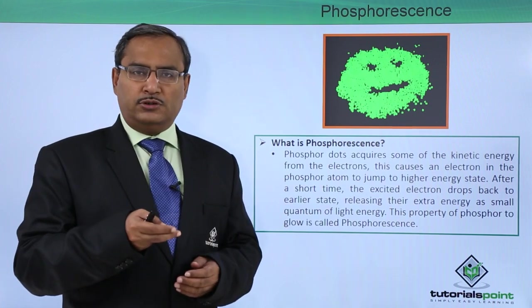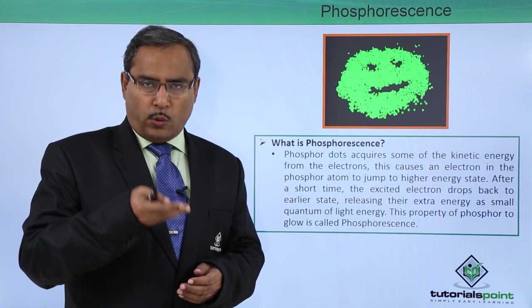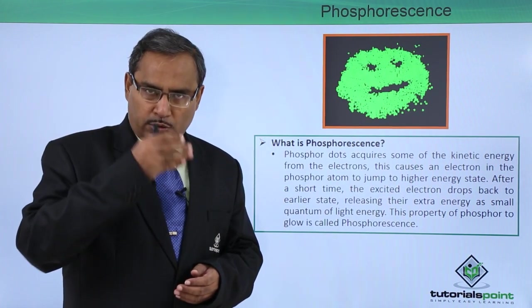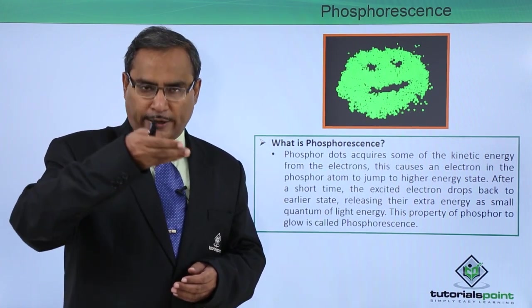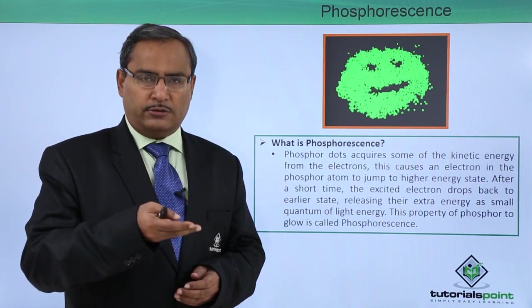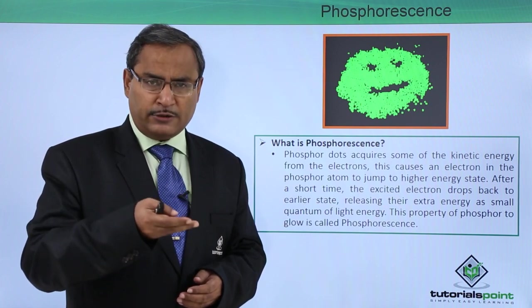When these electrons jump from the lower energy level to the higher energy level, after some time they emit that extra energy and return to the initial state, the initial energy level of that particular electron.